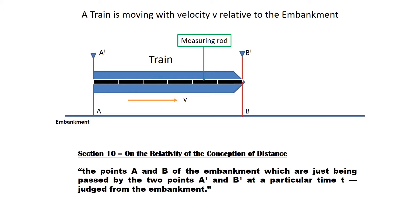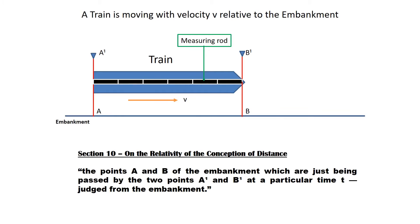Einstein defines two points A and B on the embankment — those points which are just being passed by the two points A1 and B1 at a particular time T, judged from the embankment, meaning at any particular time. We then measure the distance from A to B by repeated applications of the measuring rod along the embankment.